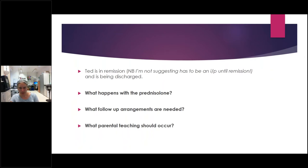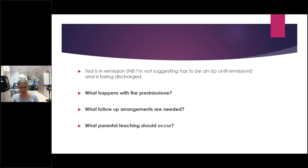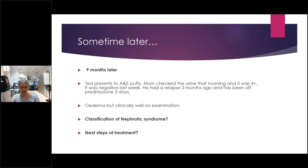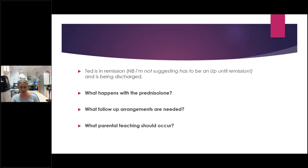Ted goes into remission and is discharged quickly. Continue prednisolone for the full four weeks regardless. Have a follow-up plan in place: let parents know when they should contact you, what to do when the urine changes, red flags for infection, chickenpox contacts, and when the child can return to nursery. Make sure parents can give the medications without stopping them abruptly, how to dip the urine correctly — dip it, wait before reading — and to keep written records of results. That habit of record-keeping is very helpful long-term.